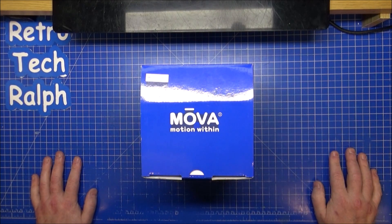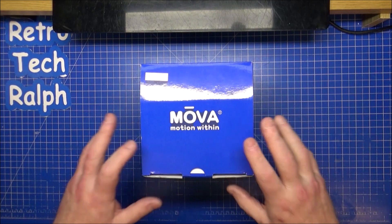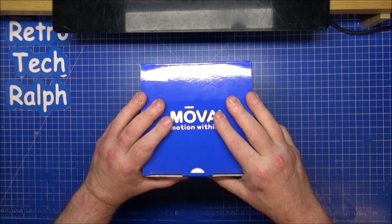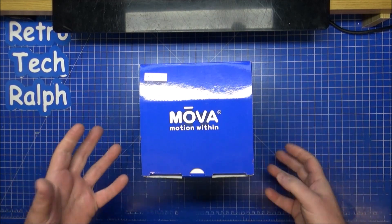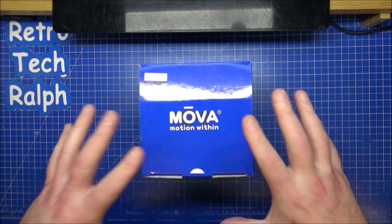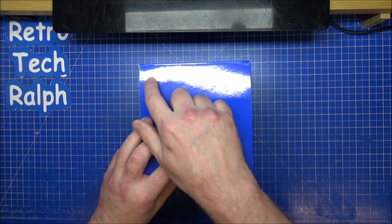Hi guys, Retro Tech Ralph here. I've got another product review, this is the Mova Globe. This time it's the moon, the Earth's moon. Mova do different moons and different planets, but at the moment I don't have any of those, but we have the Earth's moon. Now these are numbered.